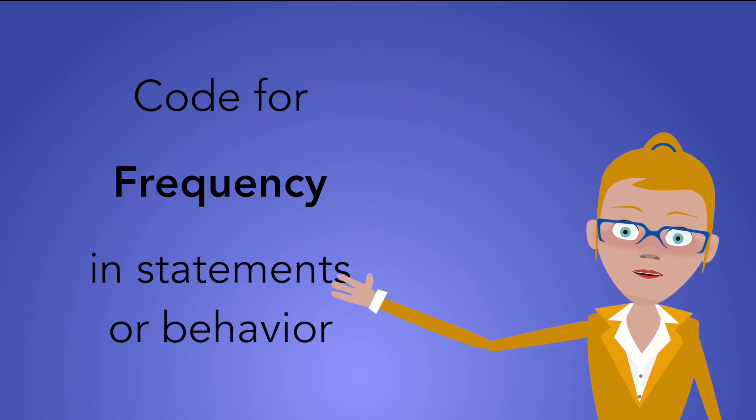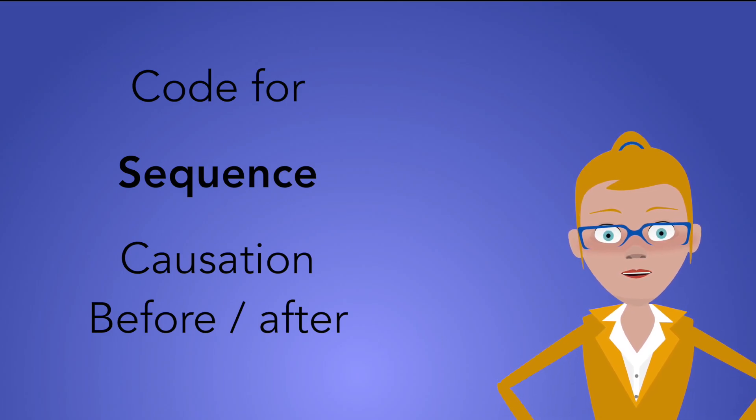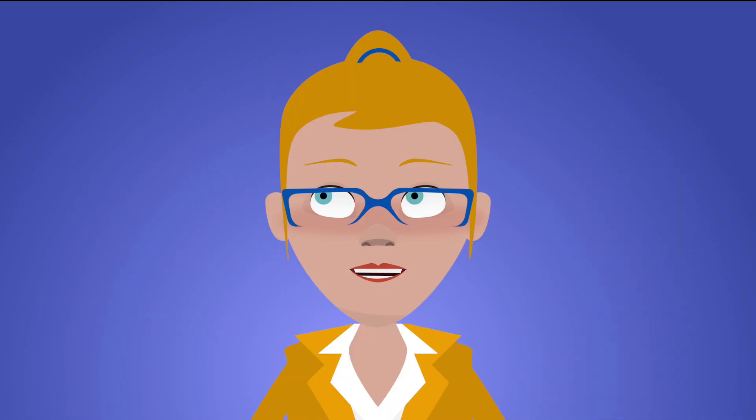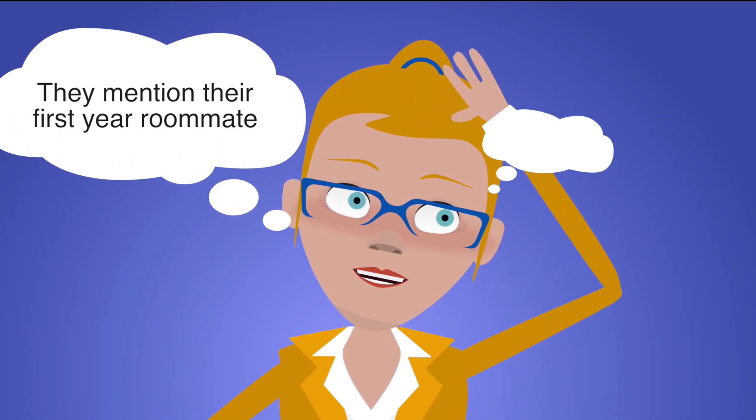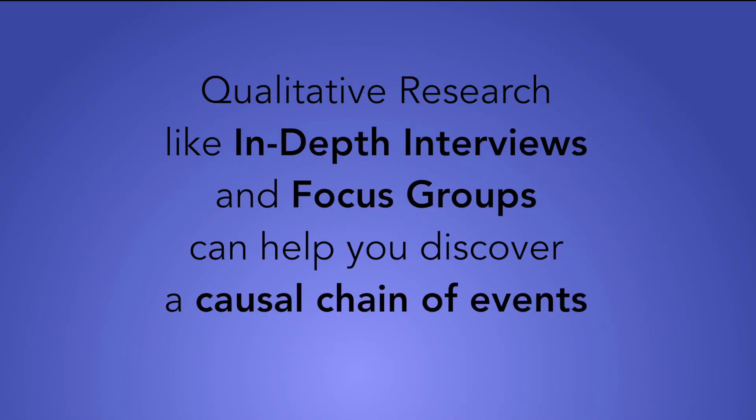You could also be looking at sequence. Sequence is particularly useful for thinking about causation. How often do they do it? What do people do? And do they do it before or after something? So in order to think about causation, you need to be able to say that A comes before B and that therefore A causes B. This is how qualitative work can be quite useful is that you can, in fact, code for sequencing and thinking about causation.